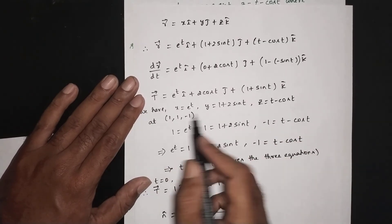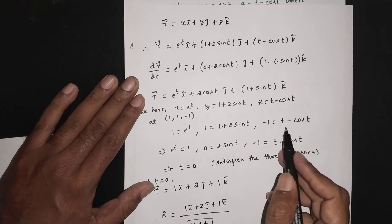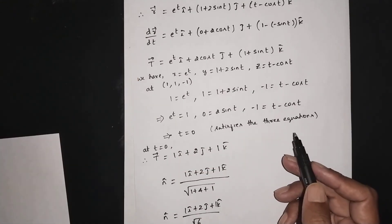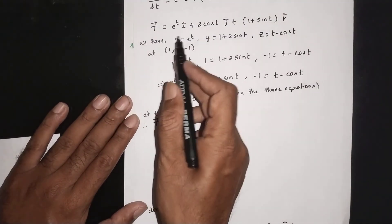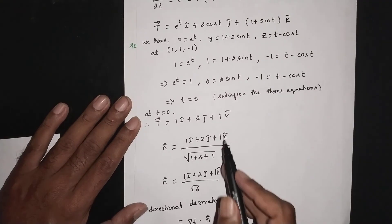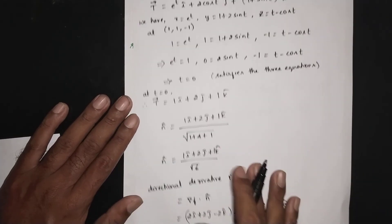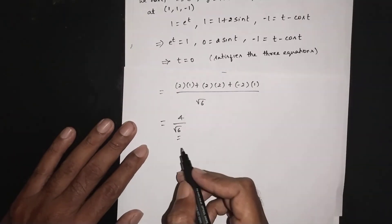At (1,1,-1): e^(4t)=1, 2sin(t)=0, t-cos(t)=-1, all satisfied by t=0. At t=0: dr/dt = 4·1·i + 2cos(0)j + (1+sin(0))k = i + 2j + k. The unit tangent n̂ = (i + 2j + k)/√6. Directional derivative = ∇f · n̂ = 4/√6.